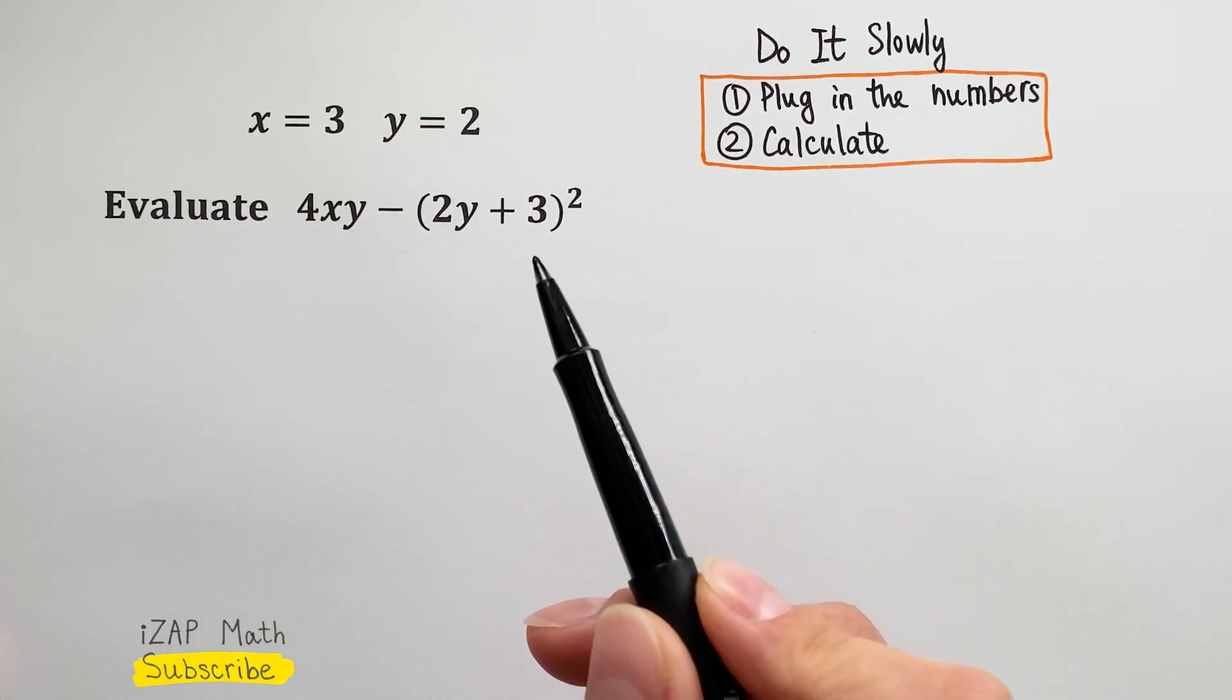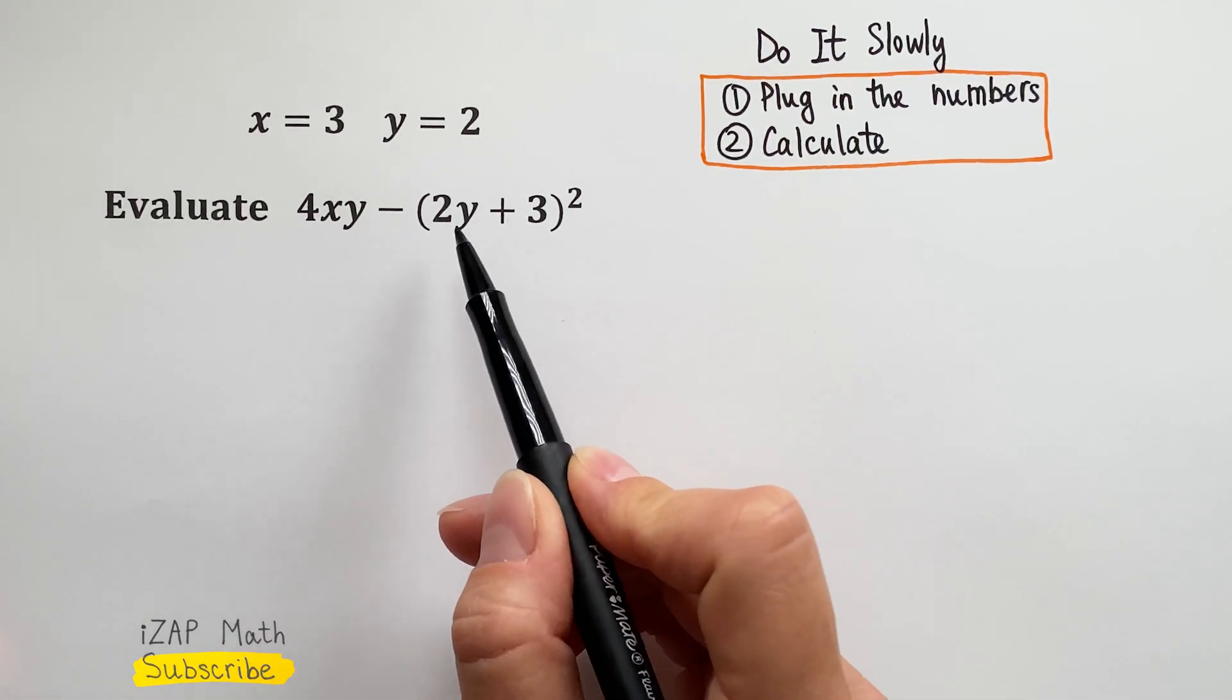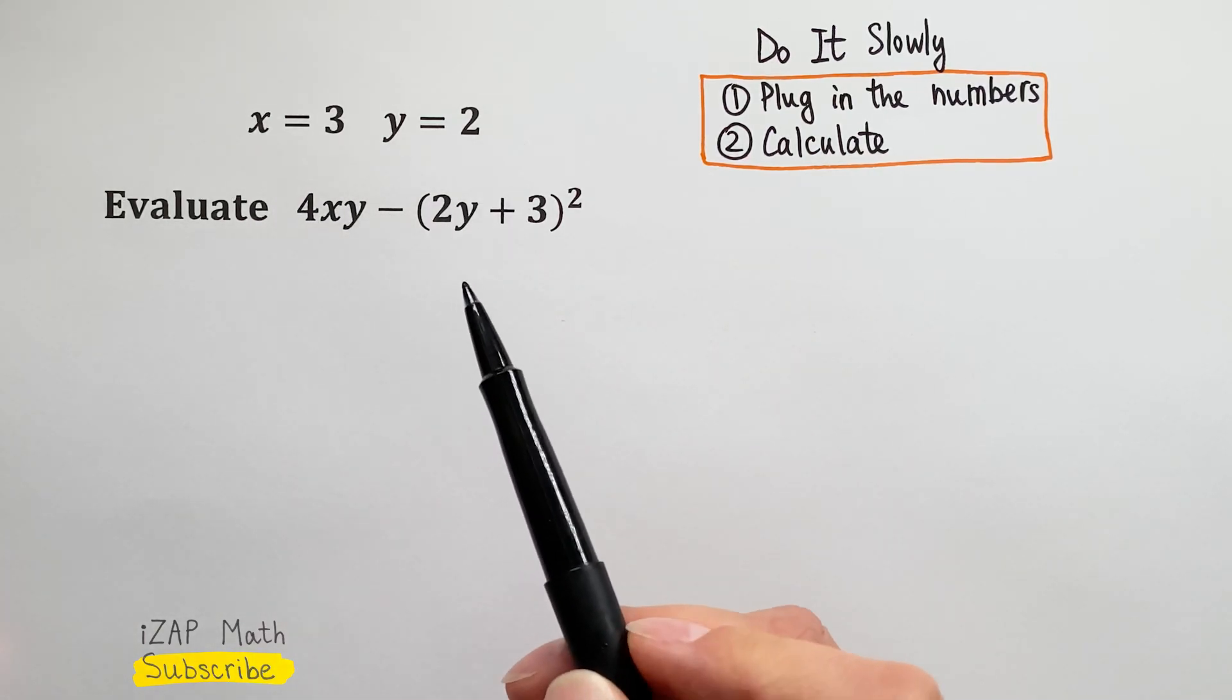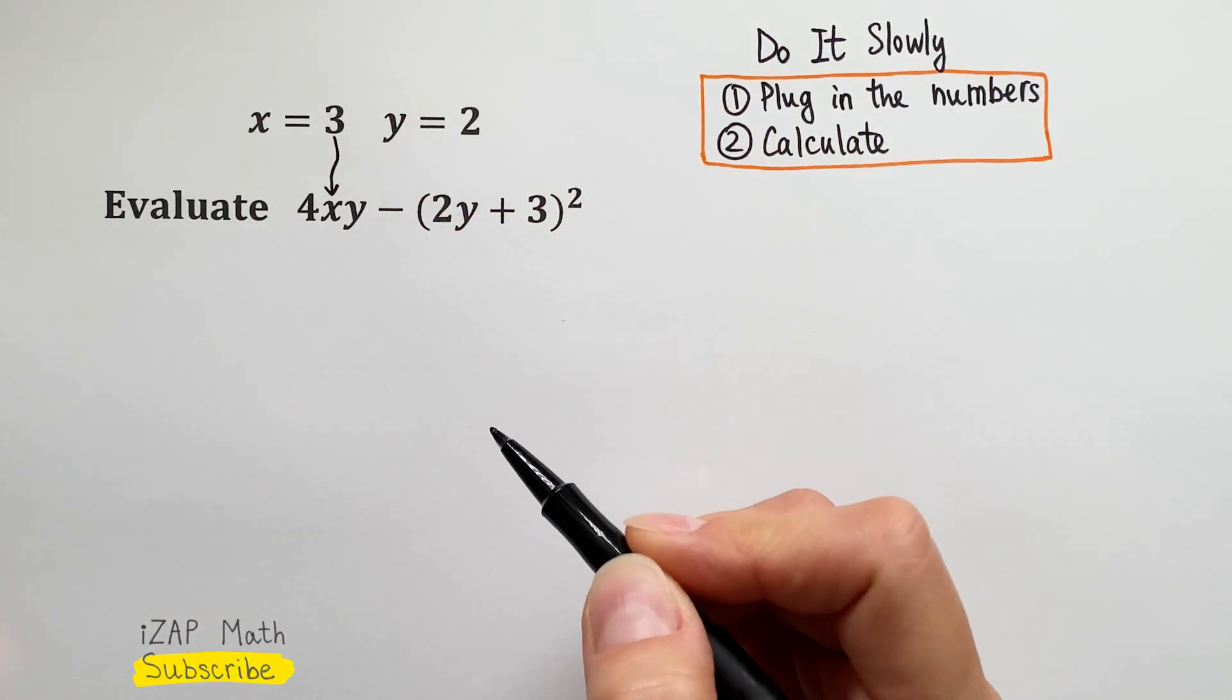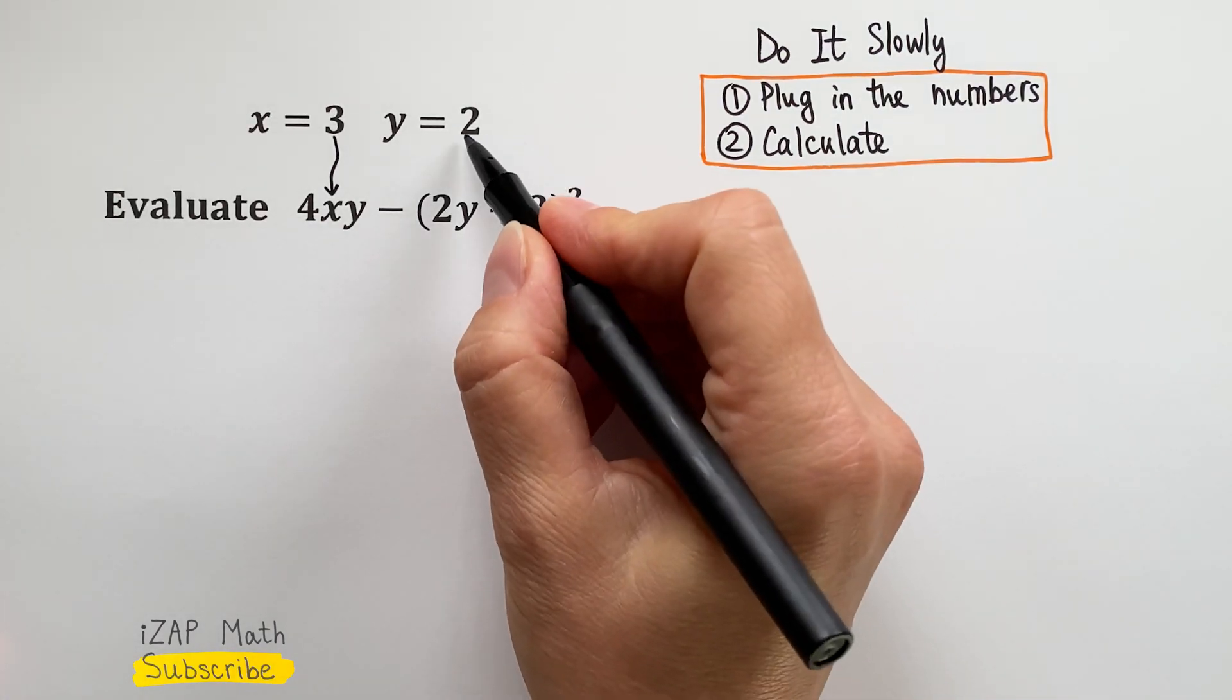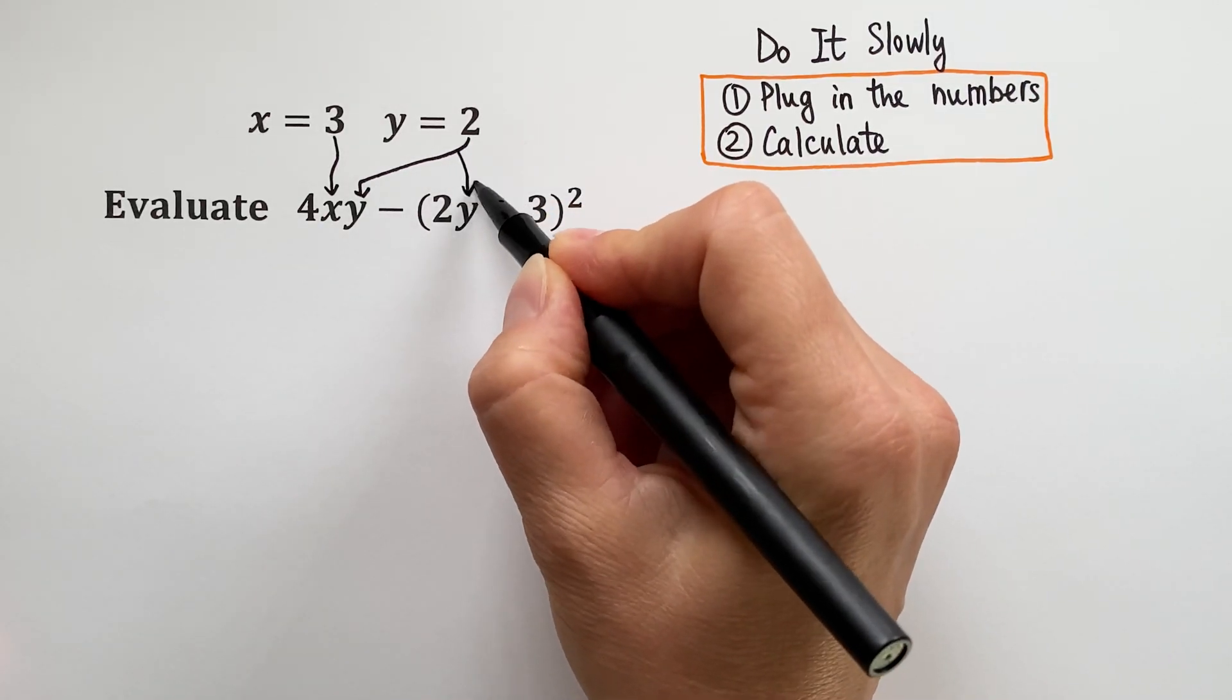Here's our expression. We have two variables, x and y, and y shows up in two places. We have the numbers for these variables. x equals 3, so we will take 3 and plug it in where x is. y equals 2, so we will take 2 and put it where y is, in two places.